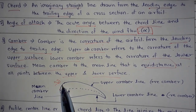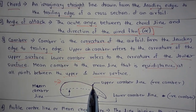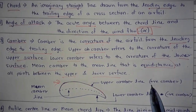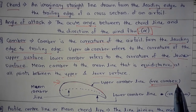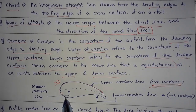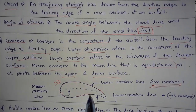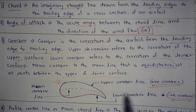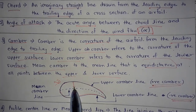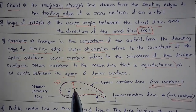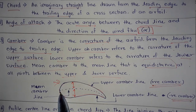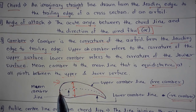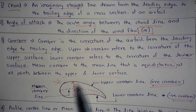In the diagram, this is the upper camber line which has a positive camber, and this is the lower camber line which has a negative camber. At equidistance between them, this is the mean camber line.